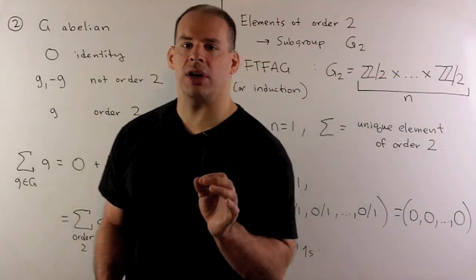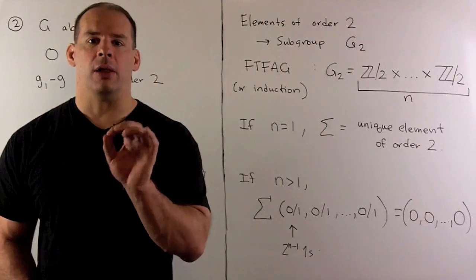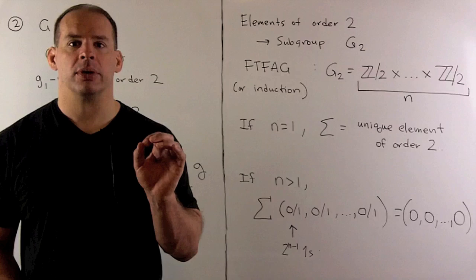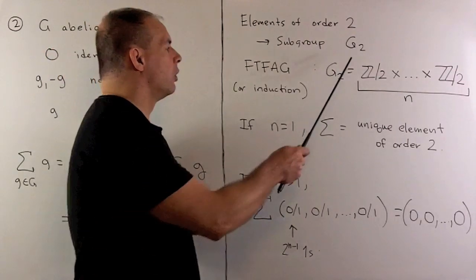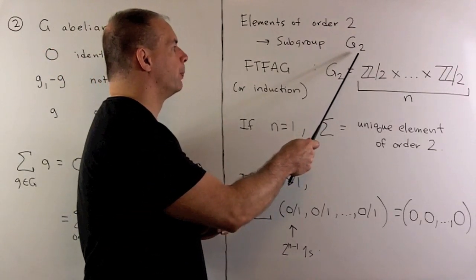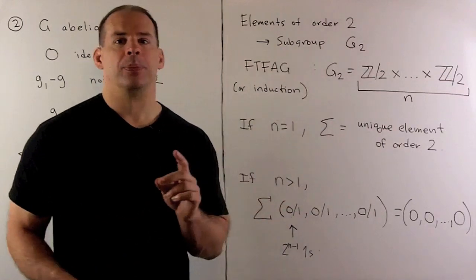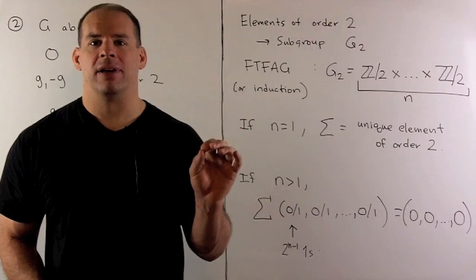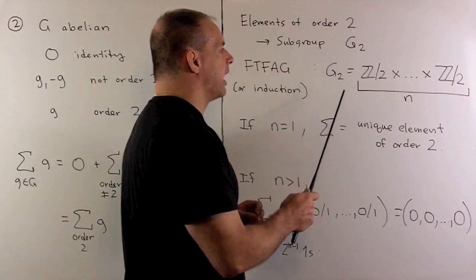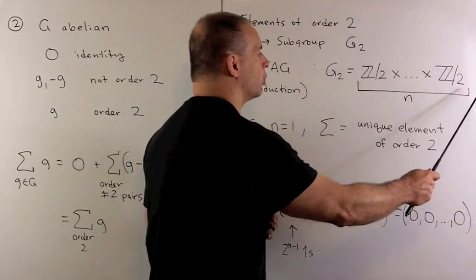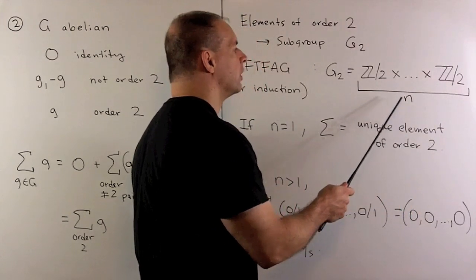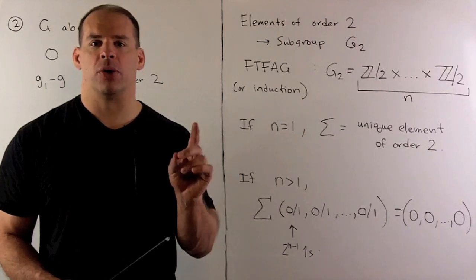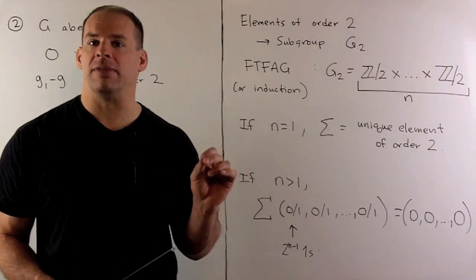If I consider all the elements of order 2 together with the identity, that's going to form a subgroup — I'll leave that as an exercise. Call the subgroup G2. Now, by the fundamental theorem of finite abelian groups, G2 can be written as a product of Z2 groups — say there are N of them. We don't need to invoke the fundamental theorem; we could actually show this with induction, and again I'll leave that as an exercise.